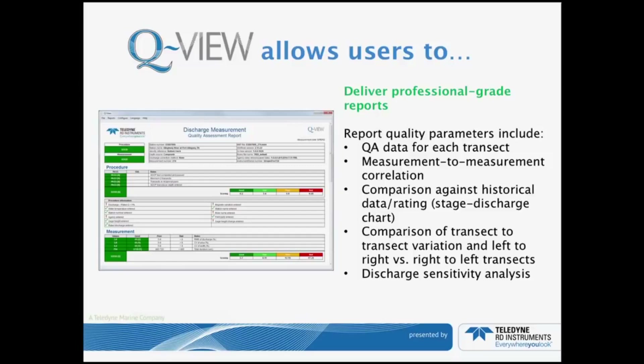QView also allows users to deliver high-grade quality reports. The quality assurance data for each transect is going to be displayed, each measurement is going to be displayed, and comparisons against your historical data and rating are going to be displayed. Transect variations from left to right and right to left transects, as well as a discharge sensitivity analysis, are presented in these detailed reports.